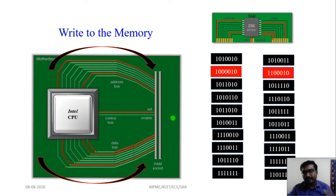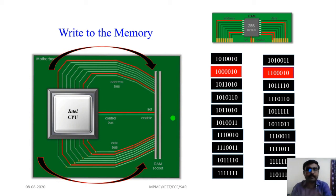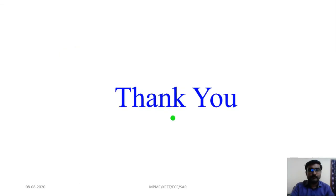To summarize: the address bus sends the address to the memory to find the correct location. Depending on the control signal, a read or write operation is performed. If the read signal is enabled, data is read from memory. If the write signal is enabled, data is stored in memory. This is the basic function of the buses used in a microprocessor. Thank you.